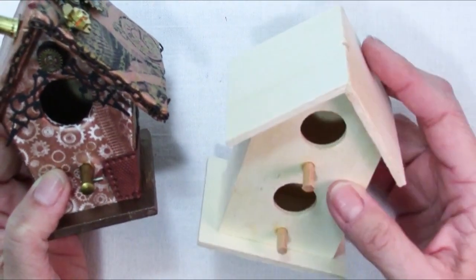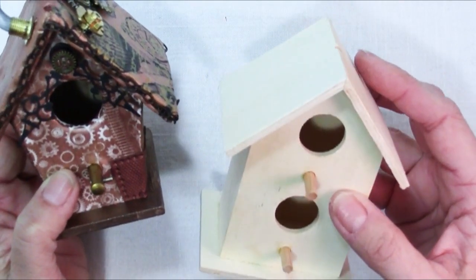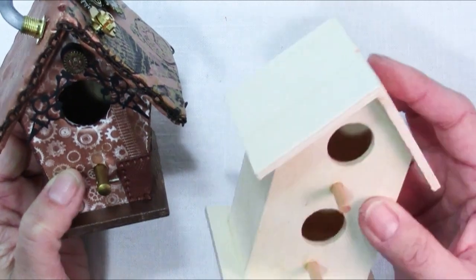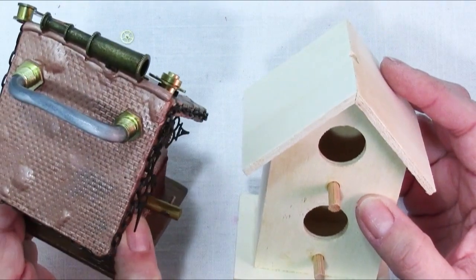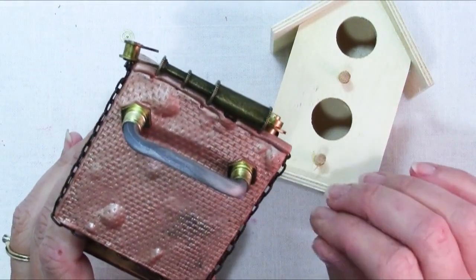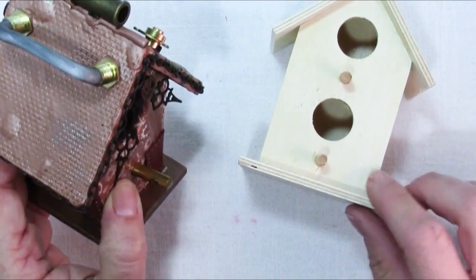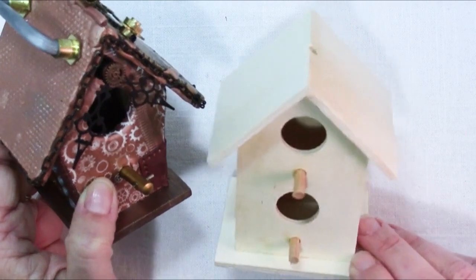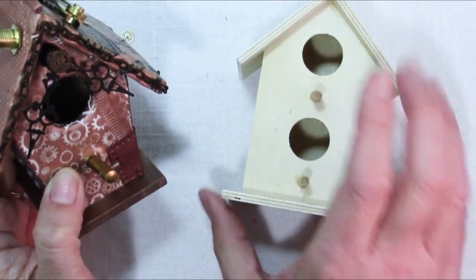One precautionary step I took, I'm not sure how much of a difference it made, but I took both of my little houses and put them in the oven, a 275 degree oven for about an hour and a half and then let them cool before I even, just to dry them out a bit before decorating.